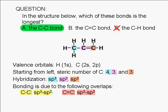p orbitals stretch out further from the nucleus than s orbitals. And sp3 orbitals have more p character than sp2 orbitals.